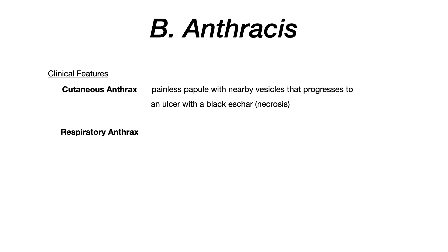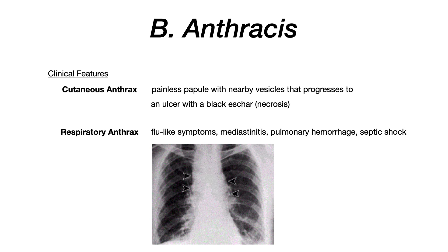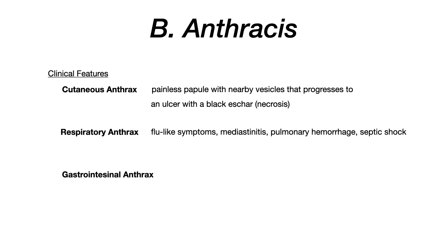Next is respiratory, also known as pulmonary anthrax. This begins with flu-like symptoms, then mediastinitis — the mediastinum becomes inflamed. You can also see hemorrhage and this can progress quickly into septic shock. The image to look for on your exam is widening of the mediastinum — that mediastinal area is stretched out laterally. Third is GI anthrax: nausea, vomiting, bloody diarrhea, and lymphadenitis. Anything that sounds gastrointestinal could be GI anthrax.